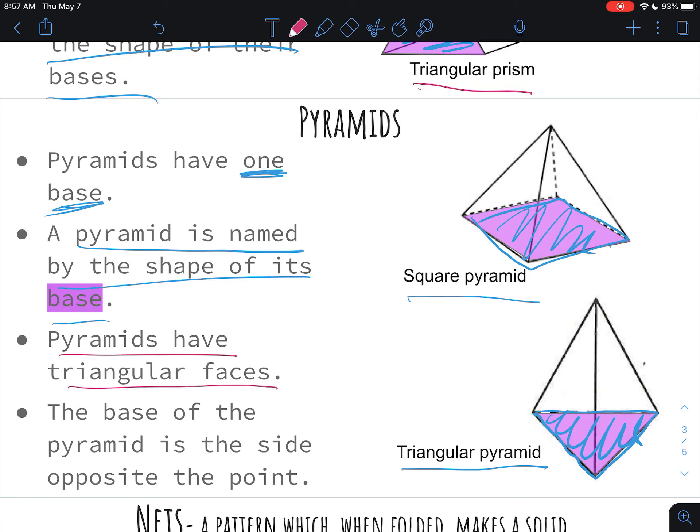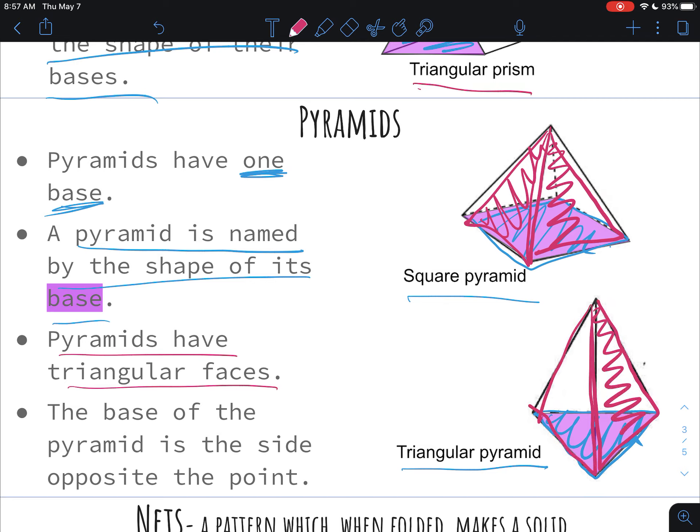So after the basis, so the base is obviously going to be the shape of its name, but after that, pyramids have all triangular faces besides the base. So if you look at the square pyramid, all of these faces that meet up at the point or the tip of the pyramid, they're all going to be triangles. Same thing for the triangular pyramid, all of the faces that meet up at the point are going to be triangles. So it's another good thing to remember.